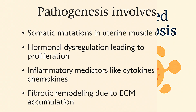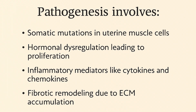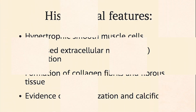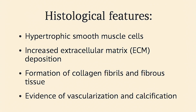Pathogenesis involves somatic mutation in uterine muscle cells, abnormal regulation of hormones leading to proliferation, and fibroid remodeling due to extracellular matrix accumulation. This cascade results in the formation of subserosal fibroids with distinct histological features.